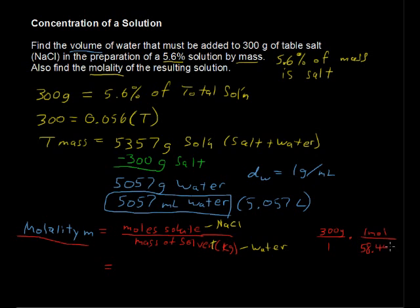58.44 grams, and that leaves us with 5.13347 moles of NaCl. So we have 5.13347 moles of the solute divided by the mass of the solvent.